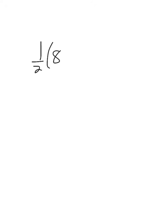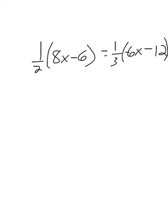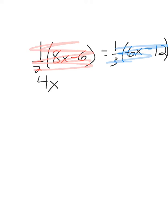Let's look at one last example. So let's say I have 1 half times 8x minus 6, and that's going to equal 1 third times 6x minus 12, with negative 6x. Once again, I'm looking to see if I have to distribute — and I have to distribute on both sides. 1 half of 8 is 4, so I end up with 4x. 1 half of 6 is 3, so 4x minus 3. That equals 1 third times negative 6x is negative 2x, and 1 third of negative 12 is negative 4.